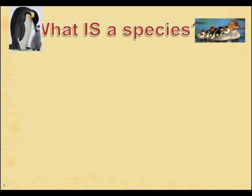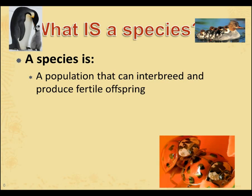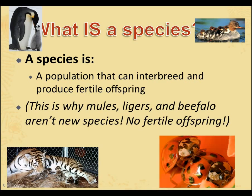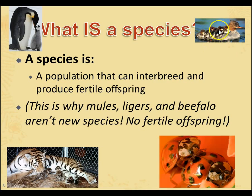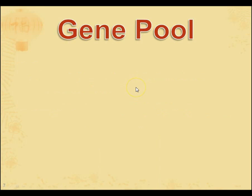So here's what a species is: a species is a population that can interbreed — they can all mate with each other — and produce fertile offspring. This is why mules, ligers, and beefalo aren't new species: they can't have babies. Tigers can breed with each other and produce fertile tigers. Ladybugs can reproduce with each other and produce ladybugs. Ducks can reproduce with the same species of ducks. They have to be able to produce fertile offspring.